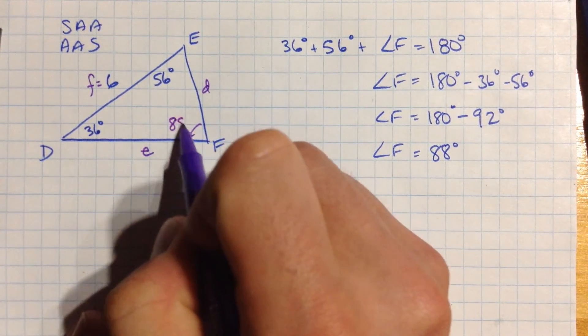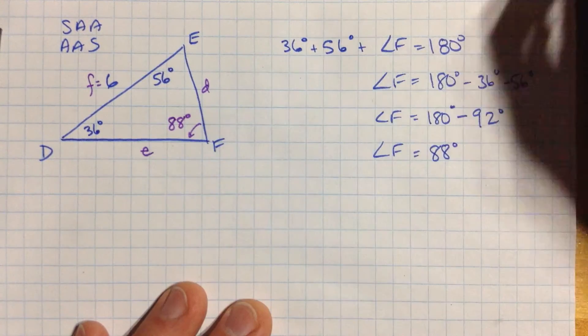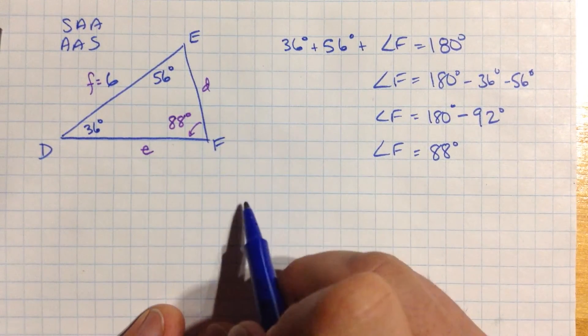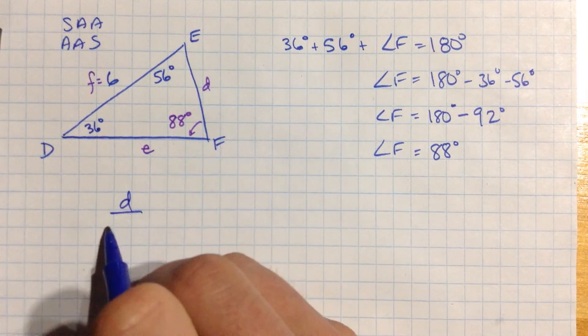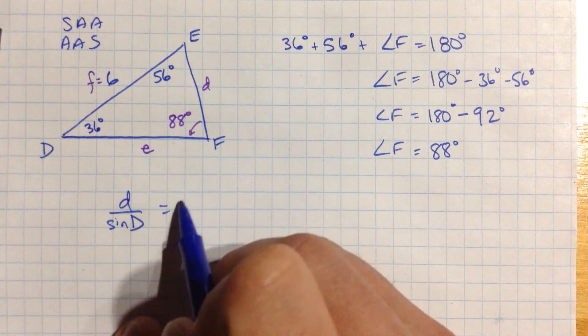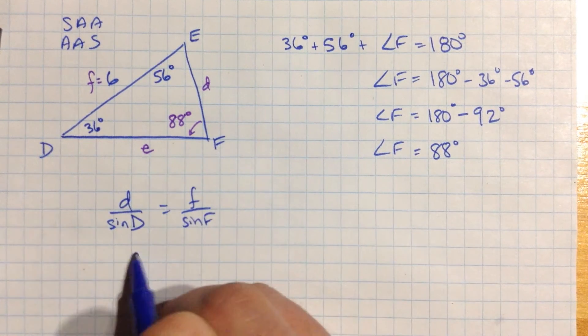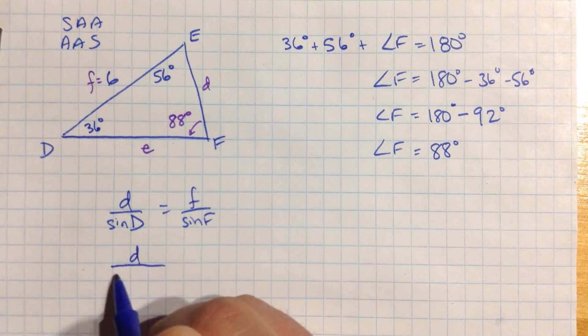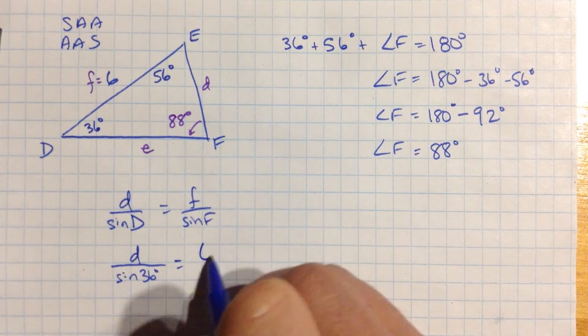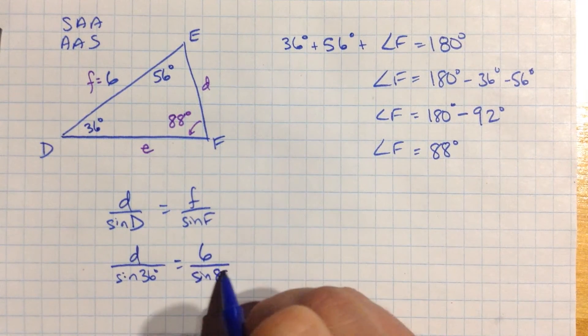So now, now that I know that, look, I've got a side and an angle opposite it. There's an angle, and I can find side e or side d pretty easily now. So let's do that. Let's find side d. d over sine of capital D is little f over sine of capital F. Little d we don't know. Sine of big D is the sine of 36. f is 6. And big F, rather, is 88. So we're looking for the sine of 88.